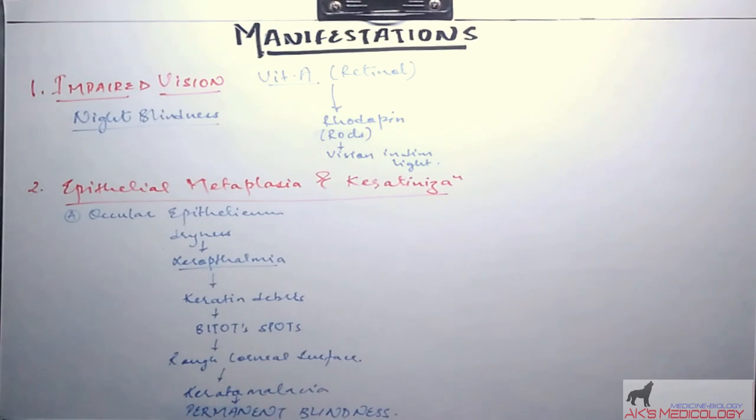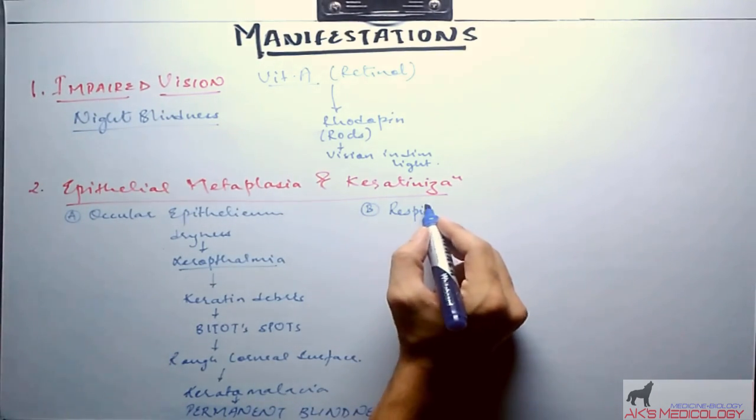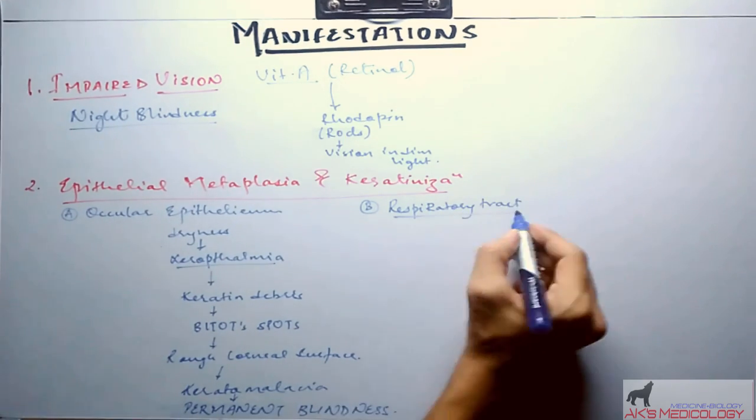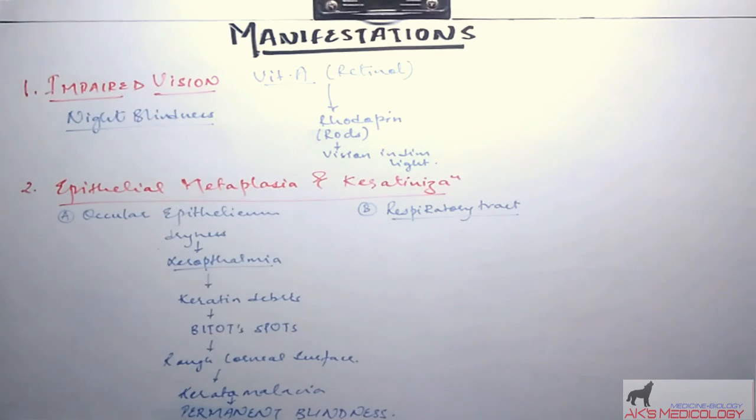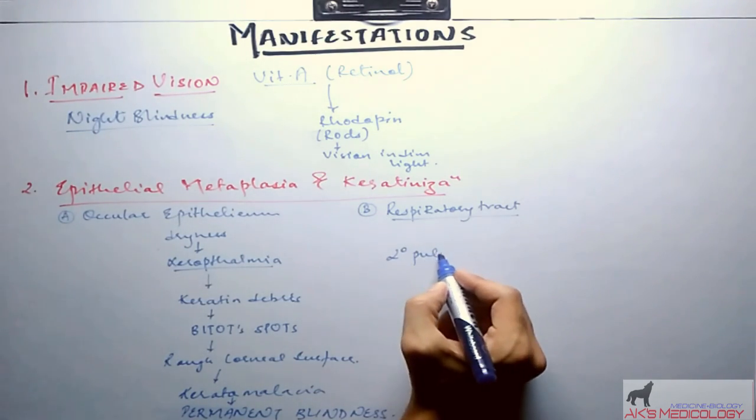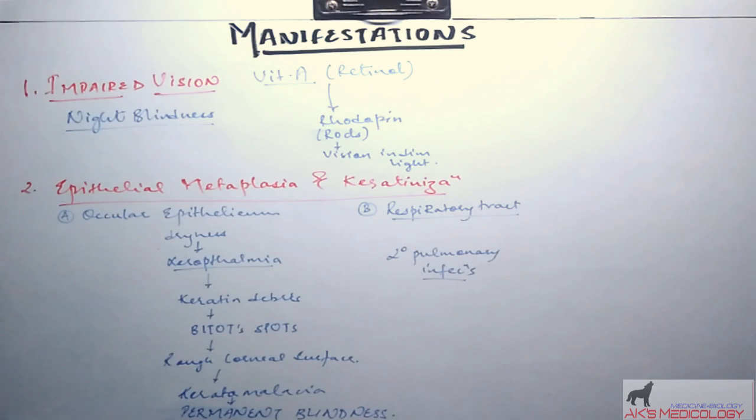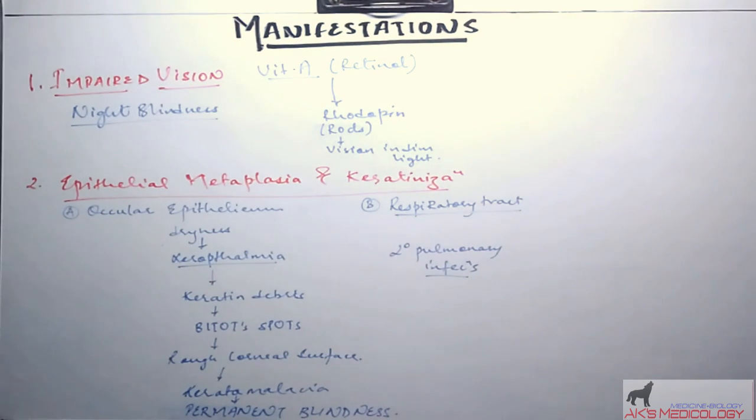Another epithelium which is affected is the epithelium of respiratory tract, or to be more precise upper respiratory tract. The mucociliary epithelium of the airways is lost which results in secondary pulmonary infections, as the mucociliary epithelium prevents the influx of pathogens inside the lungs by a constant upward motion of the cilia and mucus being sticky which adheres to the pathogens and does not allow them to go inside the lungs. If that is lost, secondary pulmonary infections occur like pneumonia.